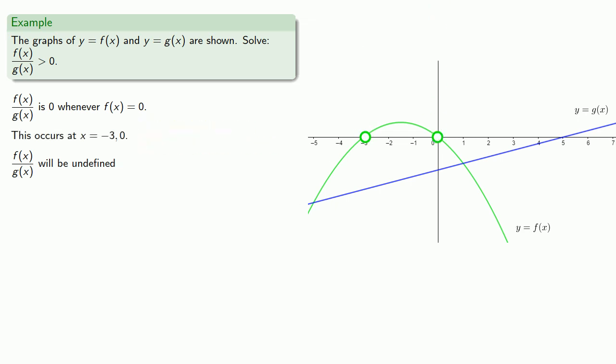Since we have a quotient, the quotient will be undefined whenever the denominator is equal to zero. So we want to know when g of x is equal to zero.